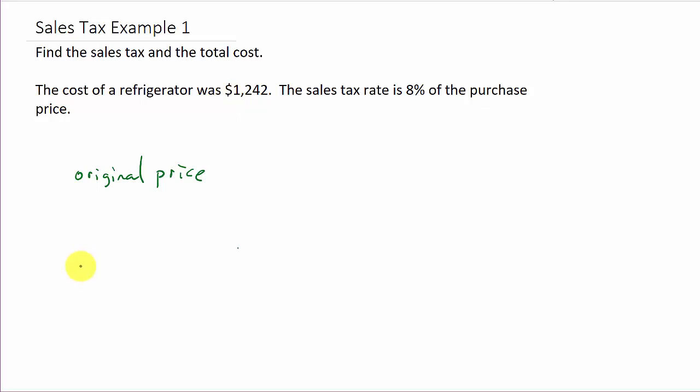Well, that's the original price times the tax rate, whatever rate—8%, 9%, 10% tax, whatever. This is how you figure out the tax.